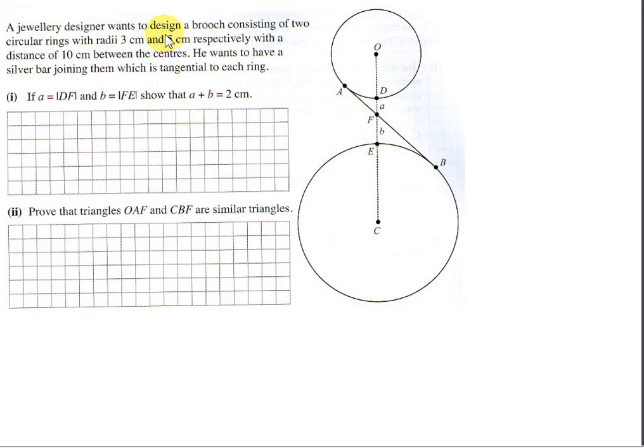A jewelry designer wants to design a brooch consisting of two circular rings with radii 3 cm and 5 cm respectively, with a distance of 10 cm between the centers. He wants to have a silver bar joining them which is tangential to each ring. If A is the distance between D and F and B is the distance between F and E, show that A plus B is 2 cm.